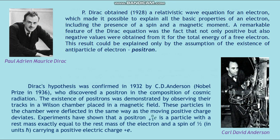Paul Adrian Maurice Dirac obtained in 1928 a relativistic wave equation for the electron, which made it possible to explain all the basic properties of an electron, including the presence of spin and magnetic moment. A remarkable feature of the Dirac equation was that not only positive but also negative values were obtained from it for the total energy of the electron. This result could be explained only by the assumption of the existence of an antiparticle of the electron — the positron.